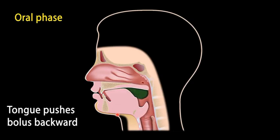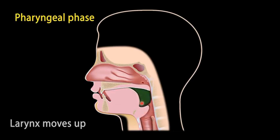Now, looking at how the pharynx functions as a digestive organ: as I mentioned, the tongue is pushing the bolus backward towards the esophagus. If the green one represents the bolus, the tongue pushes it backward towards the esophagus. When the food bolus enters this area and is moving toward the esophagus, there is movement of the larynx in the upward direction. This particular part is the epiglottis, this one is the larynx, and this area is the esophagus.